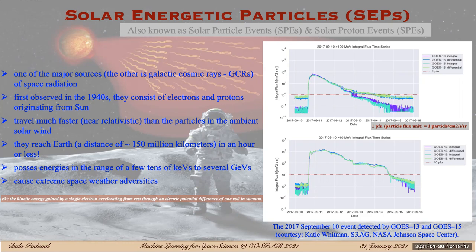They reach Earth at a distance of 101 million kilometers, or eight light minutes away from the Sun, in an hour or even less. The energies vary from several keVs — kilo-electron-volts — to a few GeVs — gigaelectron-volts — and they can lead to severe to extreme space weather conditions.